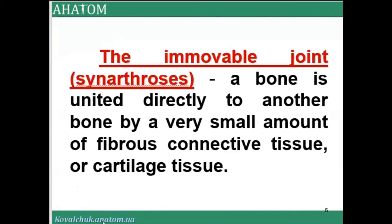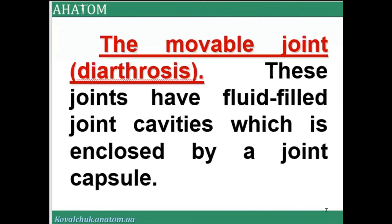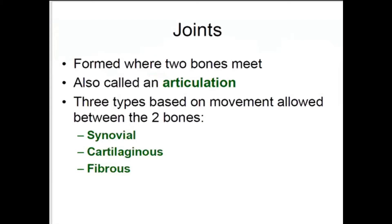Immovable joints or synarthrosis are where one bone is united directly to another bone by a very small amount of fibrous connective tissue or cartilage tissue. Movable joints, or diarthrosis, have a fluid-filled joint cavity enclosed by a joint capsule. Joints are formed where two or more bones meet, also called an articulation.